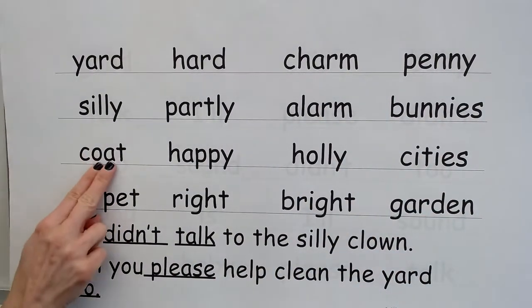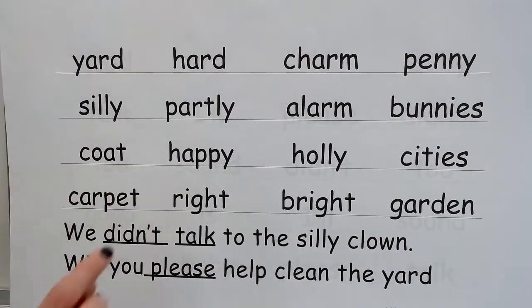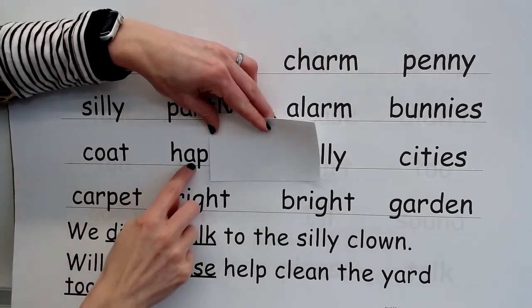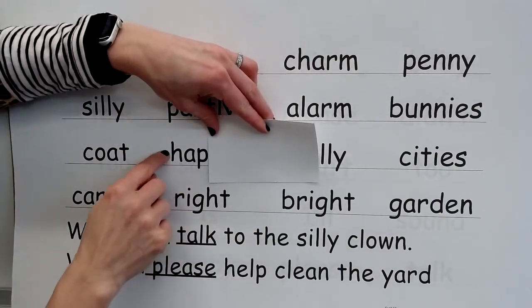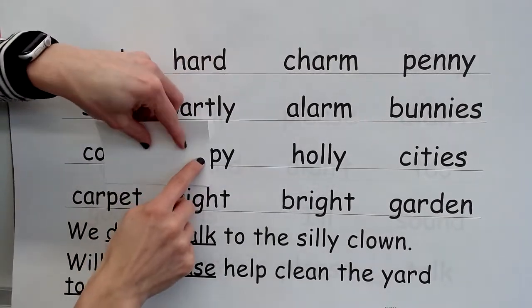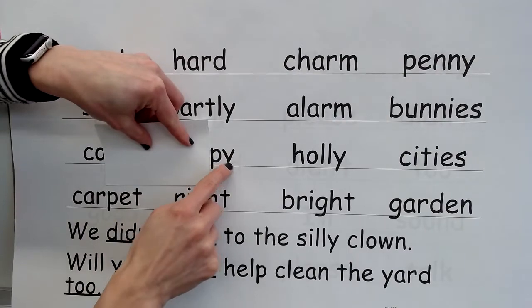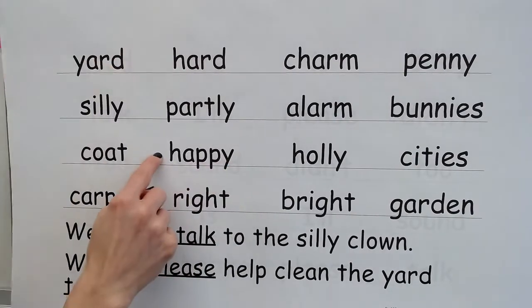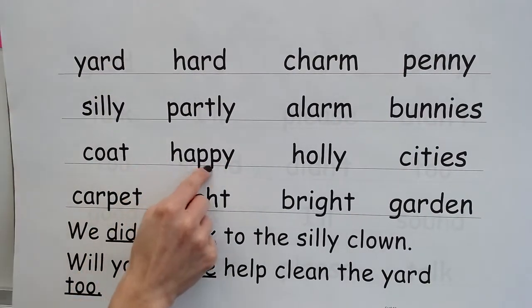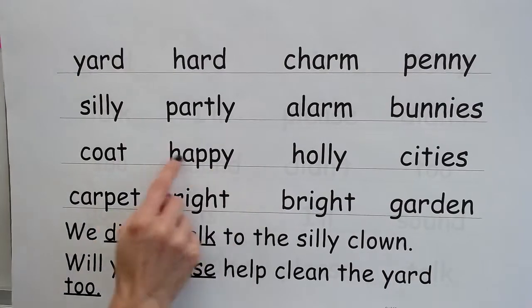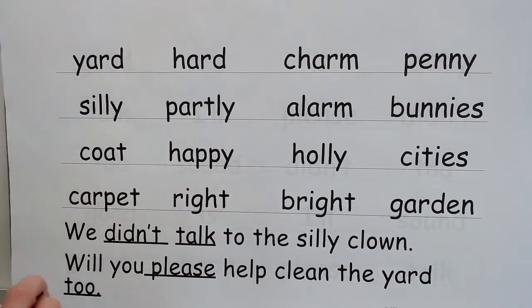Sound — O, word — coat. Sound — A; syllable — happy. Second syllable: sound — E, syllable — E. Blend — happy; word — happy. Yes, happy.